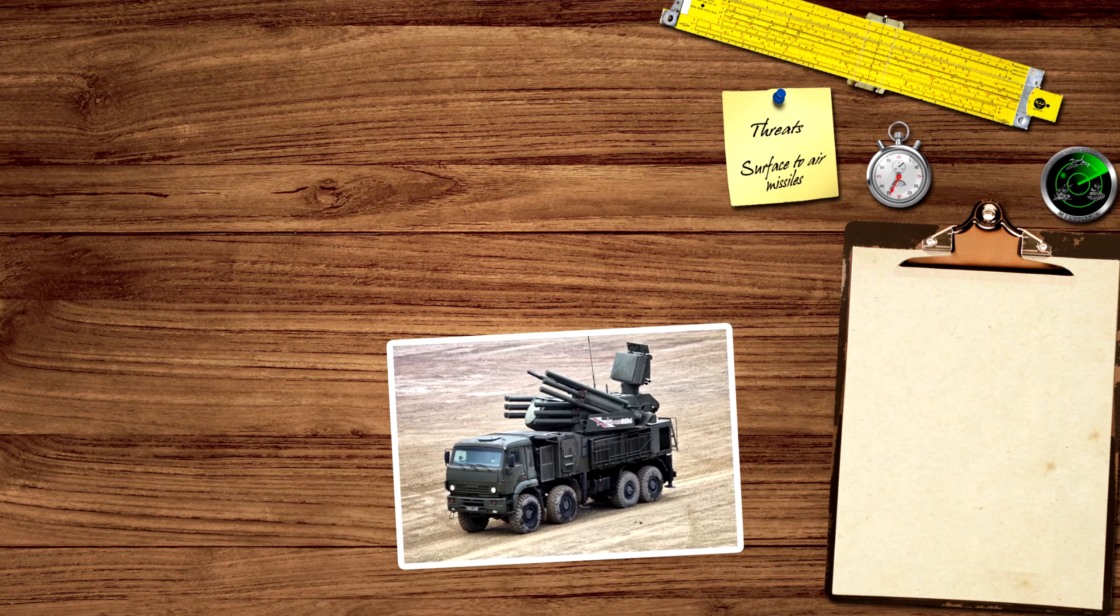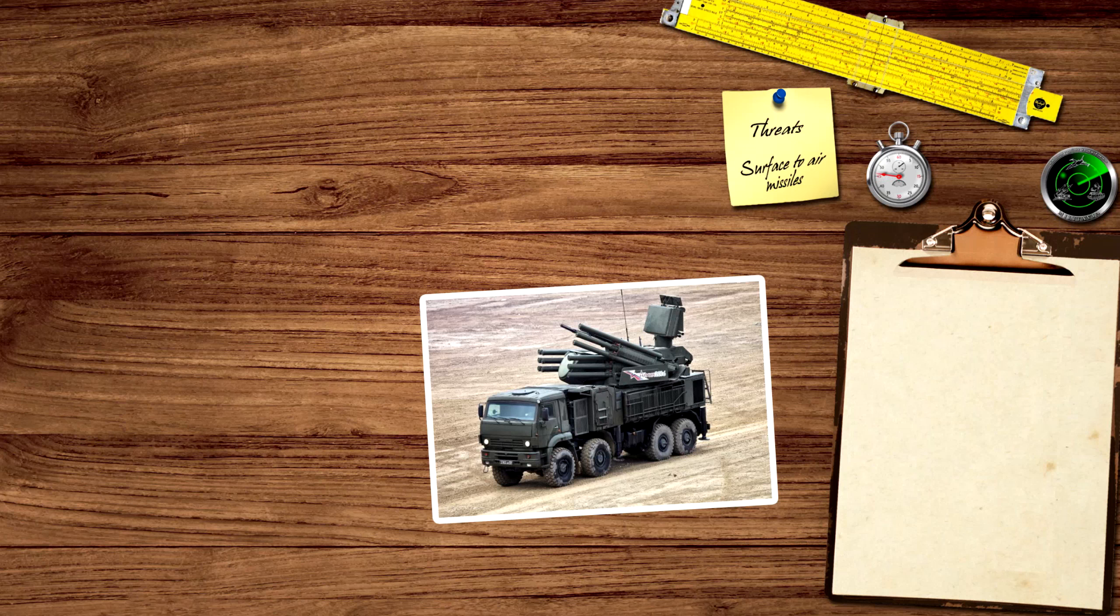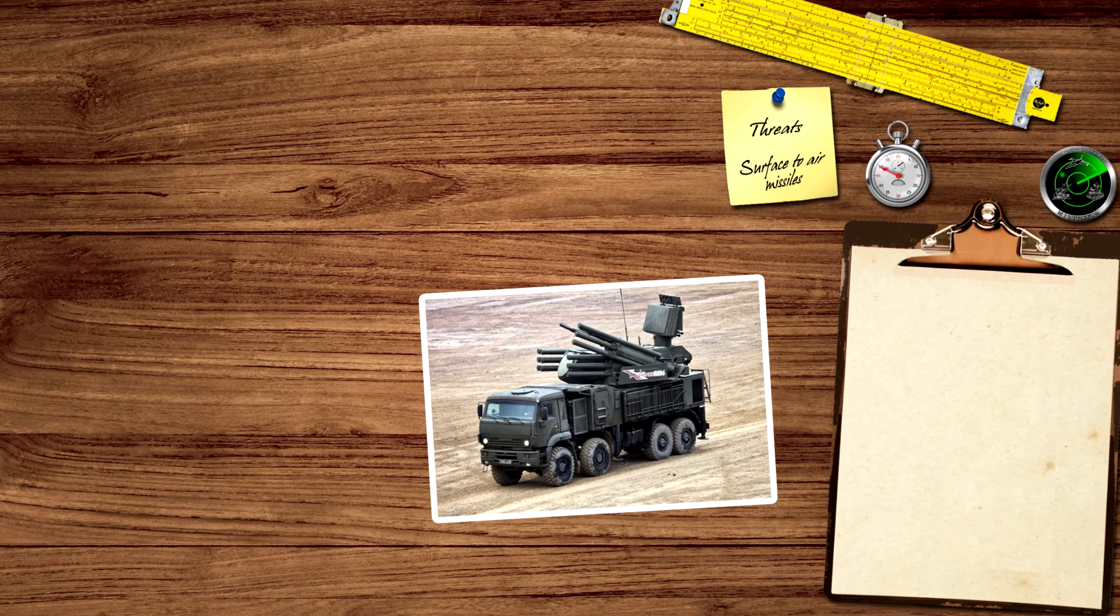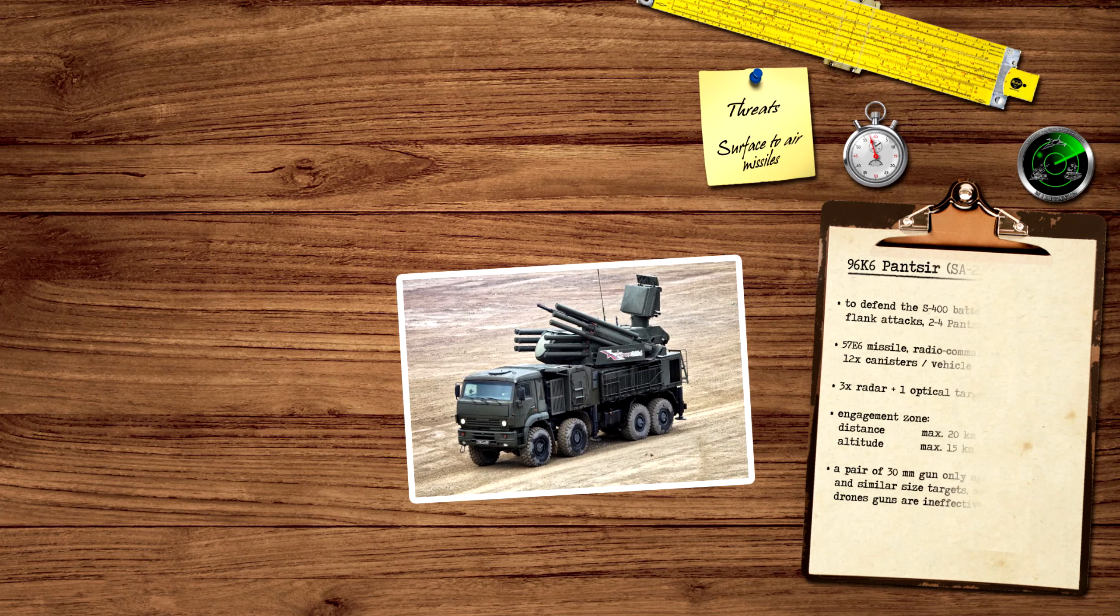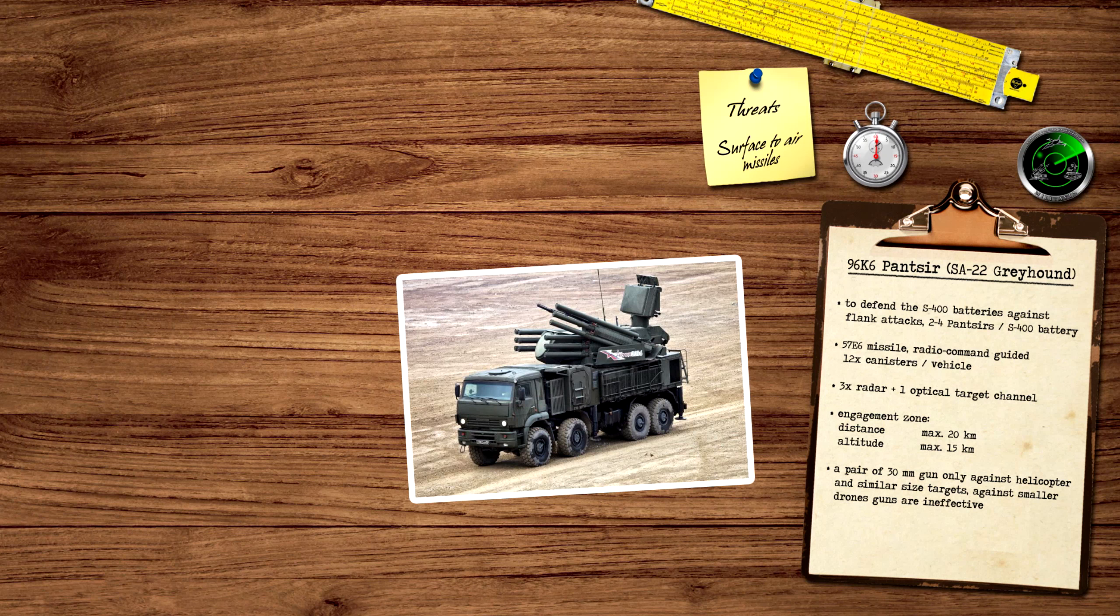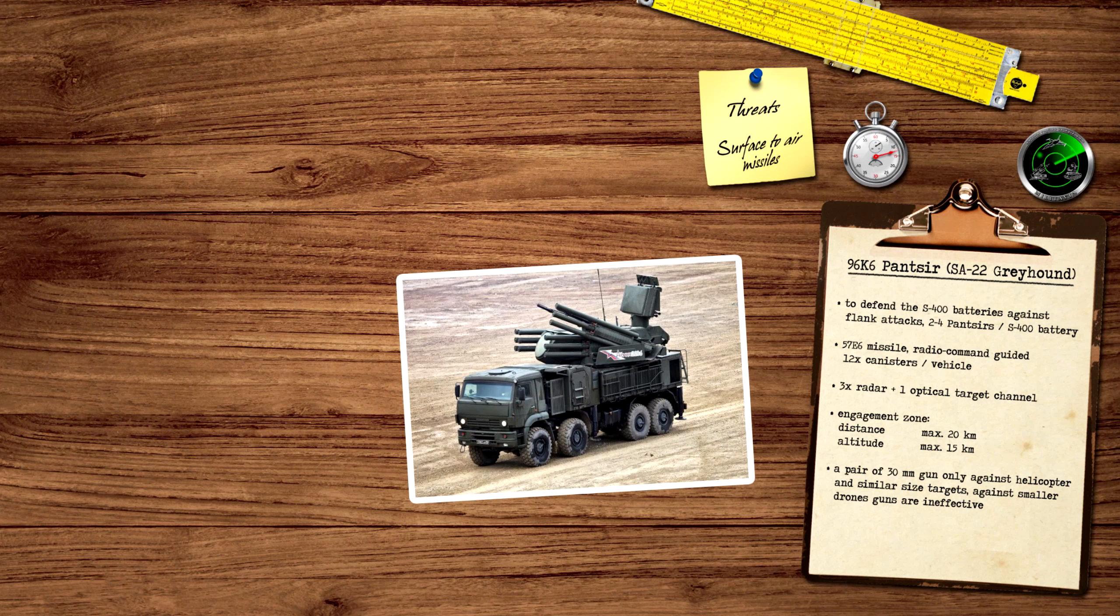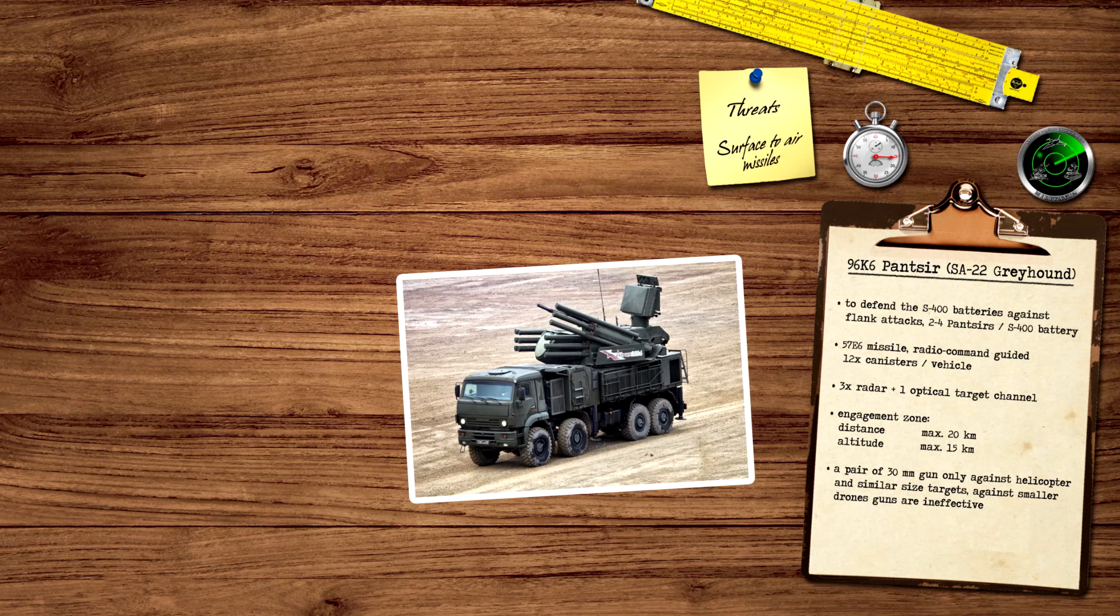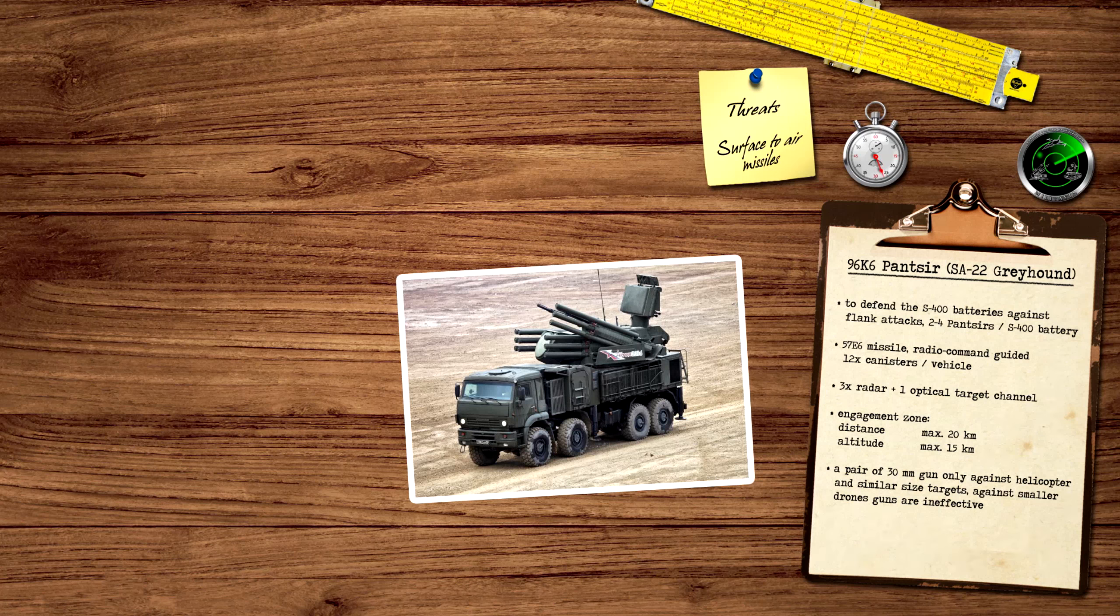The S-400 batteries can be defended by the Pantsir system, which can shoot down incoming missiles and glide bombs outside the tracking zone of the S-400's fire control radar. Typically, but not necessarily, 2 or 4 Pantsir vehicles defend an S-400 battery. The Pantsir has its own target acquisition radar. The fire control is a PESA type radar. The missiles are already command guided, but thanks to the PESA type radar, the Pantsir can track and engage 3 targets at the same time and one more target can be tracked optically with a camera. The maximum engagement range is 20 km at up to 15 km of altitude. The Pantsir has a pair of 30mm guns, but these are effective only against airplane and helicopter sized targets. They are ineffective against missiles, glide bombs and smaller drones.